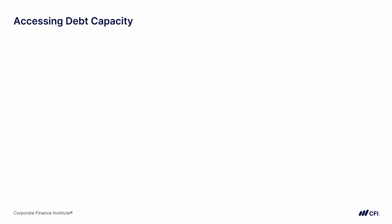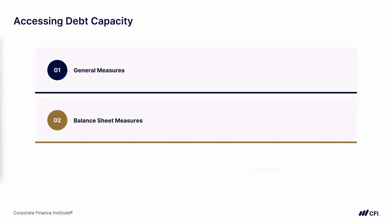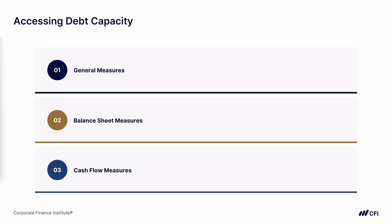As companies become more mature, they have more access to debt capital. To assess the debt capacity of a company, we can look at three categories of measures: general measures, balance sheet measures, and cash flow measures. General measures include the level of EBITDA — earnings before interest, taxes, depreciation, and amortization — as well as the volatility and stability of EBITDA, capital expenditure, and the cyclicality, risk, or competitors operating in the same industry.